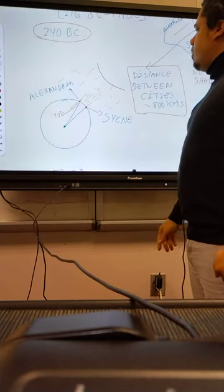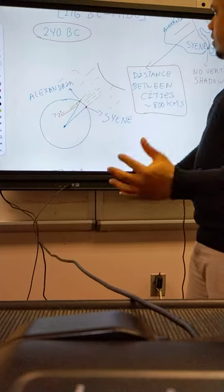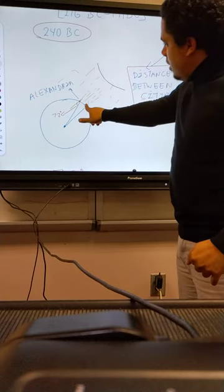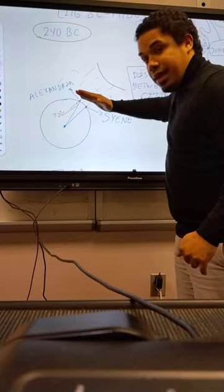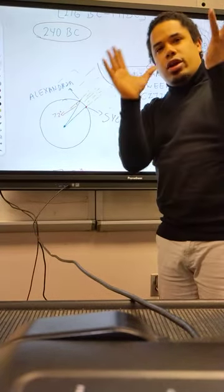So he theorized if there was a shadow, then the Earth cannot be strictly flat or a straight line. It should be a curve.